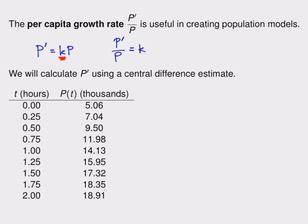That doesn't seem to be happening in our situation here. So we're going to want to look at the per capita growth rate, P' over P, and try to figure out what's going on with it. To do that, we really need to calculate the P' over P using the data provided to us. But we don't have P', we only have P. And so in order to calculate P', we're going to use a central difference estimate, which is a way of estimating the derivative that we learned back in calc 1.